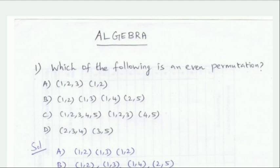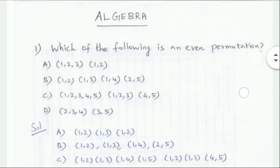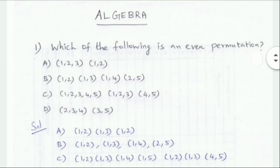Looking at the options: cycle length 2 is a transposition. The sub-expressions in the answer involve 1, 2, 3 and transpositions.